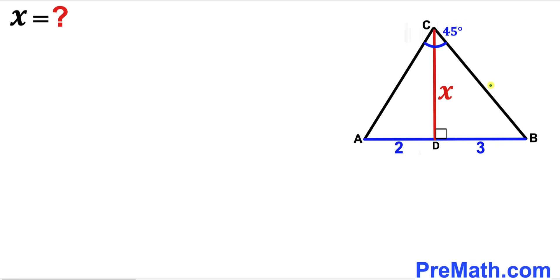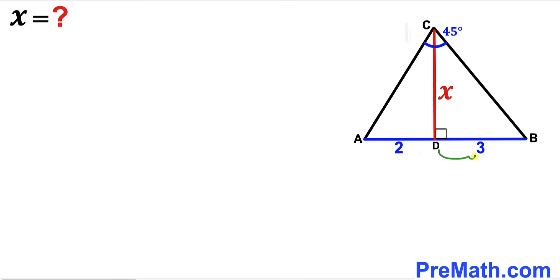Welcome to pre-math. In this video we have got triangle ABC along with perpendicular CD, as you can see in the given diagram, such that CD length is x units, segment AD length is 2 units, segment BD length is 3 units, and angle ACB is 45 degrees. Our task is to find the value of x.